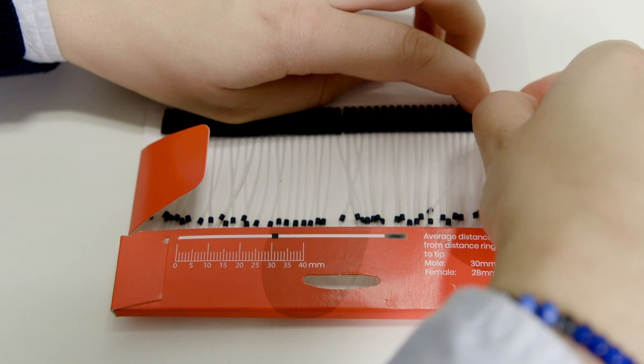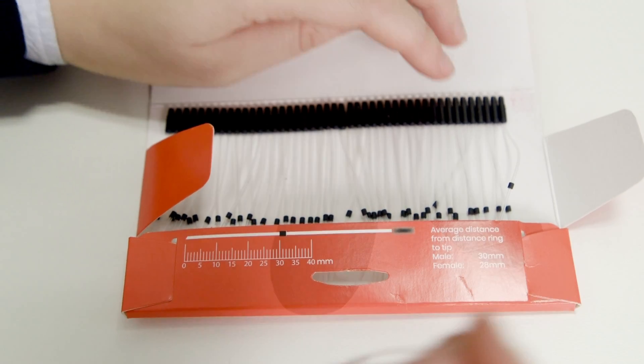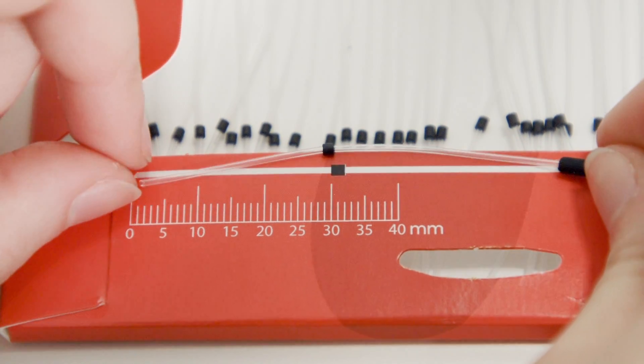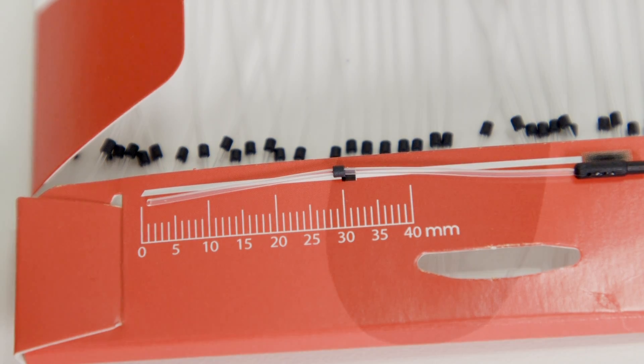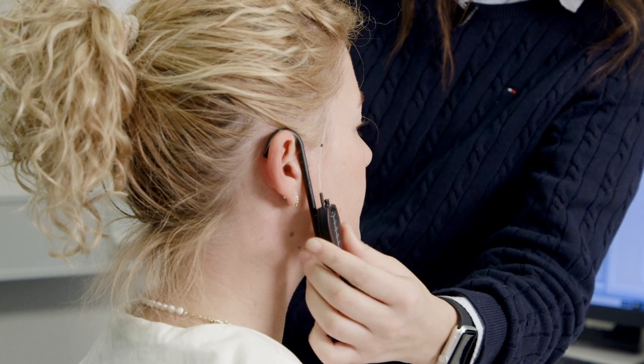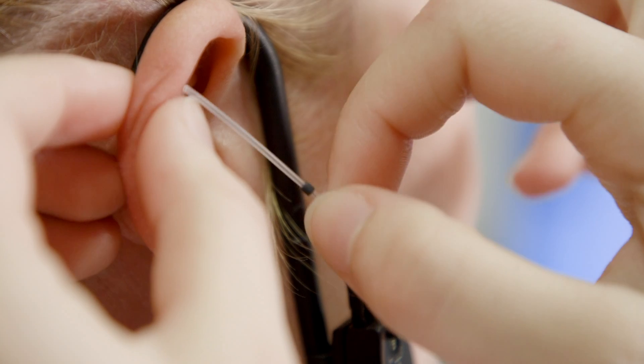The probe tubes are typically manufactured with the black marker placed at 30 millimeters. Slide the marker to the desired length, and you can now insert the probe tube until the black marker rests at the inter-tragal notch.